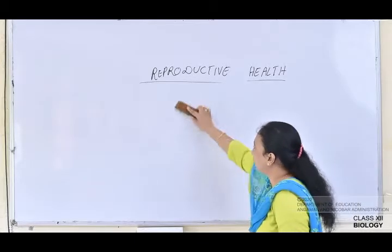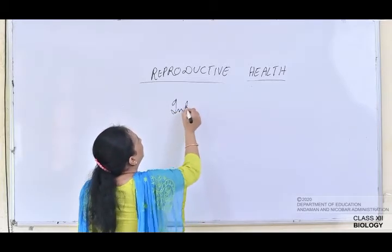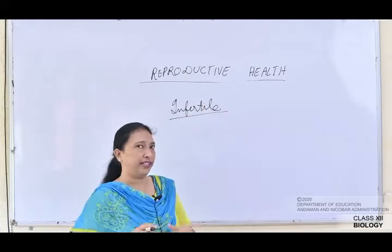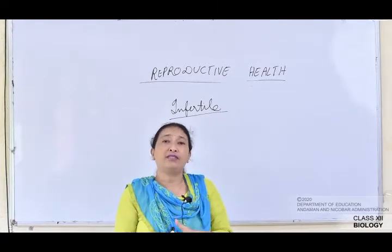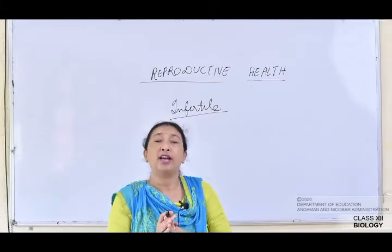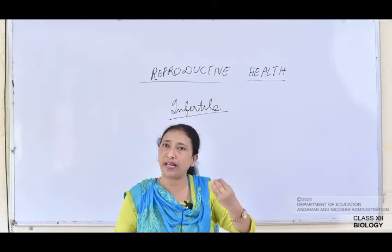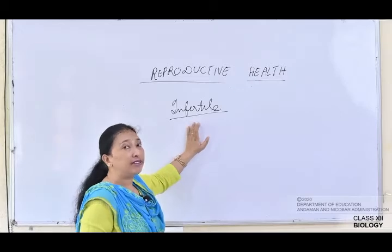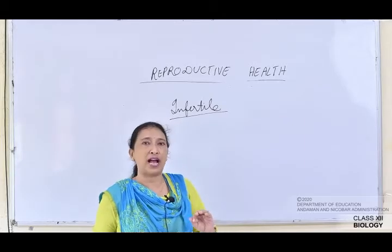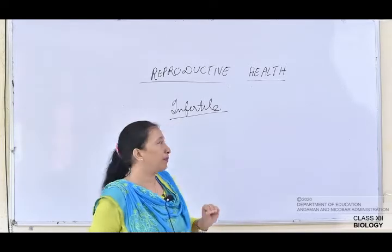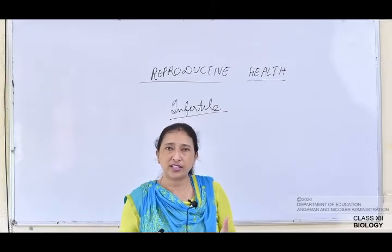How do you term a couple as infertile? Suppose a couple is cohabiting with each other and even after one to two years of cohabiting without using any protection, they are unable to have a baby — that couple is termed as an infertile couple. Even after one or two years of unprotected intercourse, if they are unable to conceive, they are known as an infertile couple.